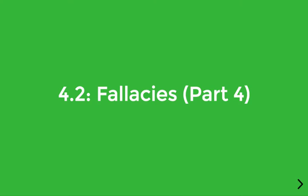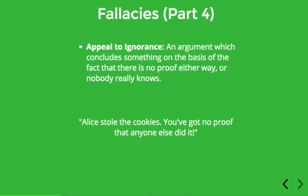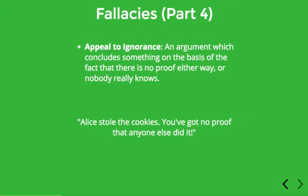Welcome back. Let's continue our discussion of these fallacies. First we'll look at appeal to ignorance. This one can be a little bit subtle, but an argument involves an appeal to ignorance when it tries to form a conclusion on the basis of a lack of proof against the alternatives.